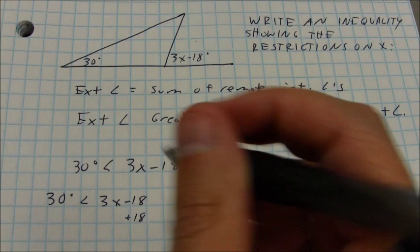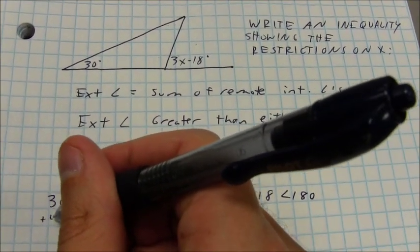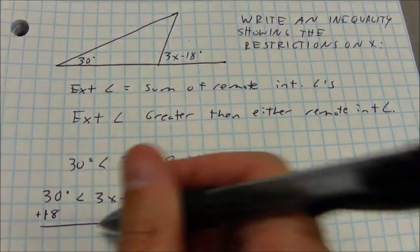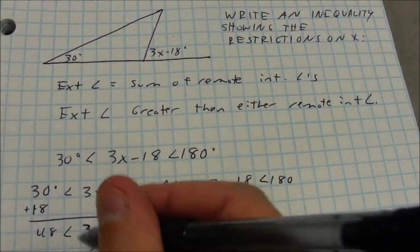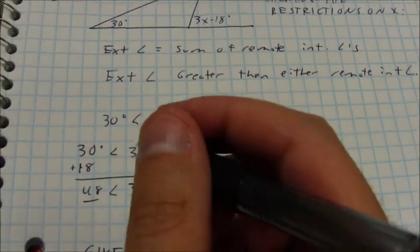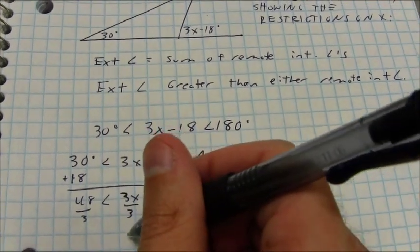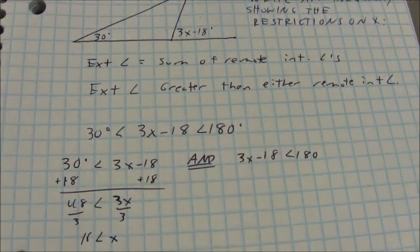I don't have to worry about any dividing by a negative or anything like that. So I know that 3x is greater than 48. You can divide both sides by 3, and I find out that x is greater than 16.